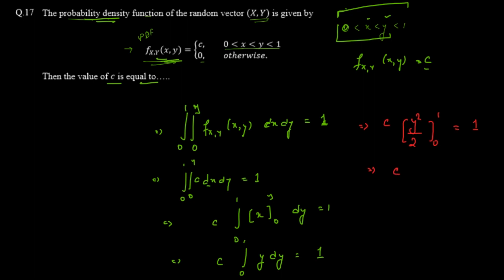Substituting the limits, we get c times (1²/2 − 0²/2) = c × 1/2 = 1. Therefore c = 2. Since this is not an MCQ question, the value c = 2 is our correct answer.